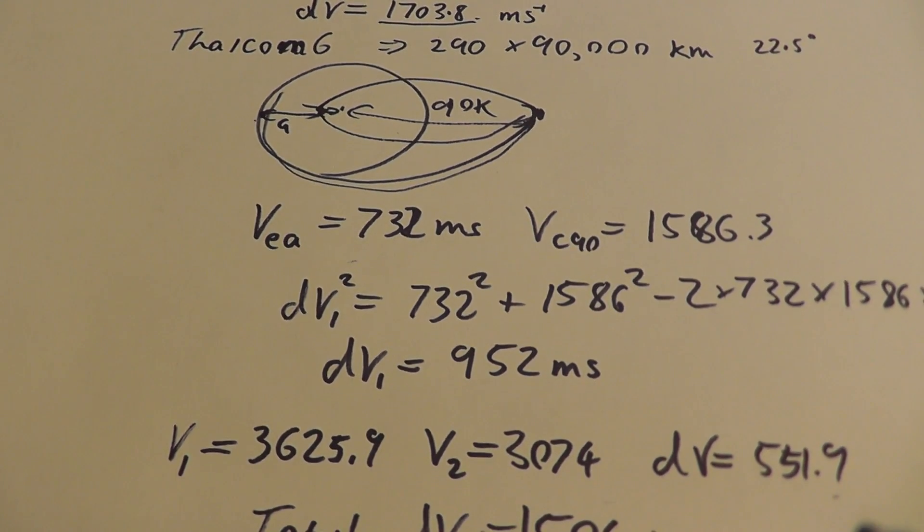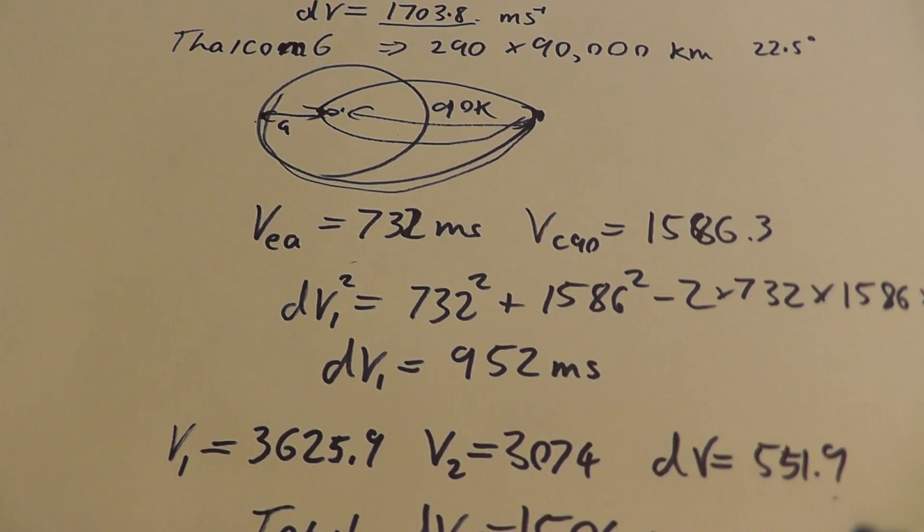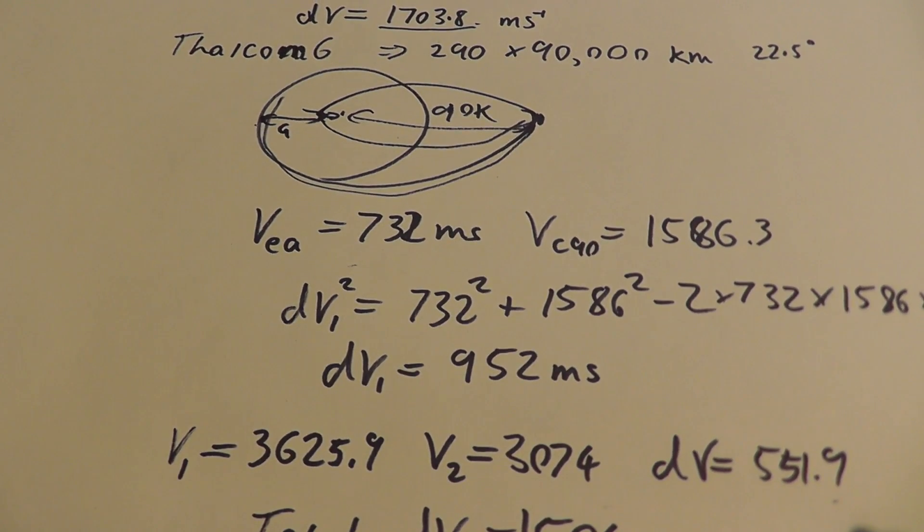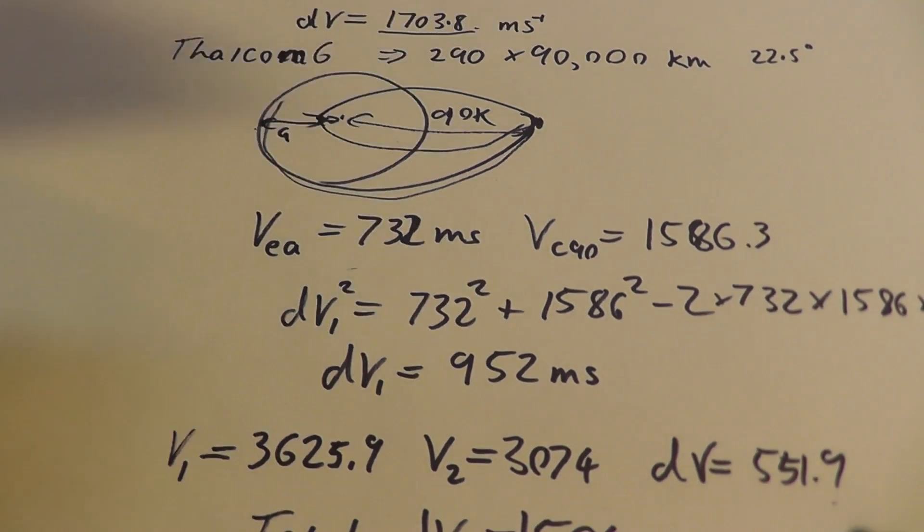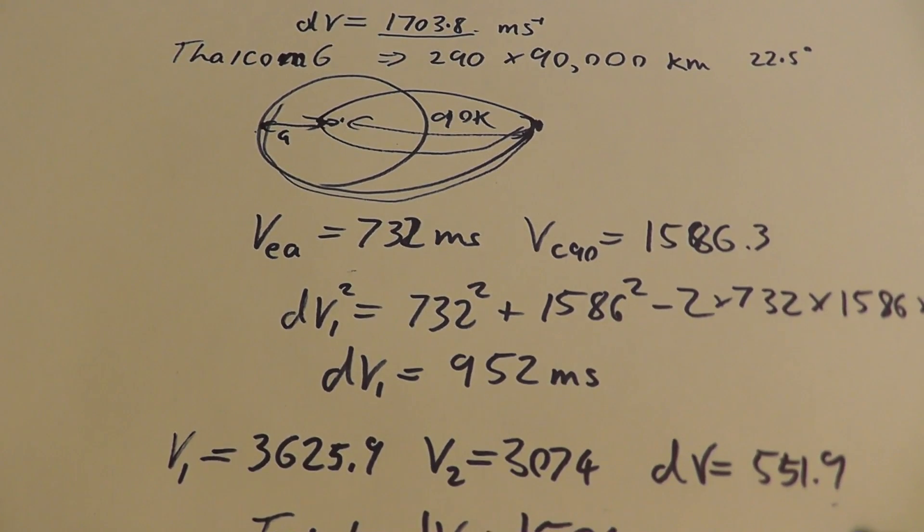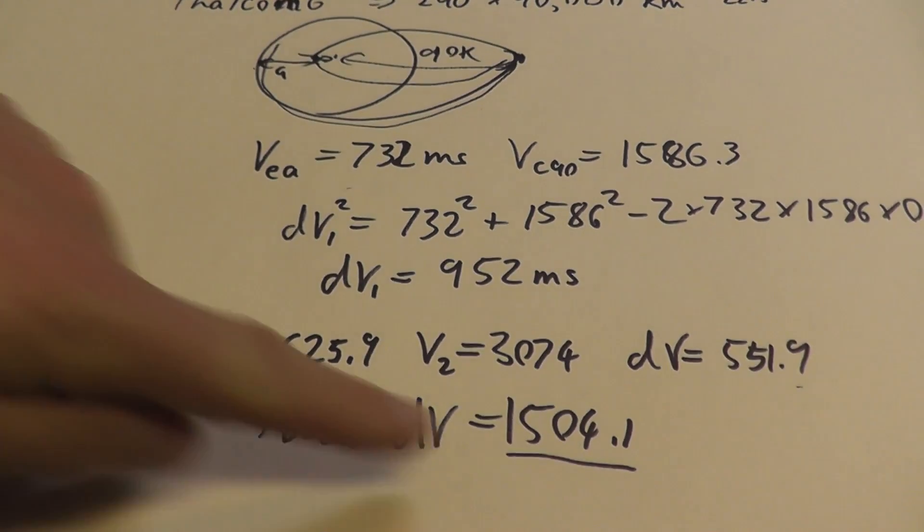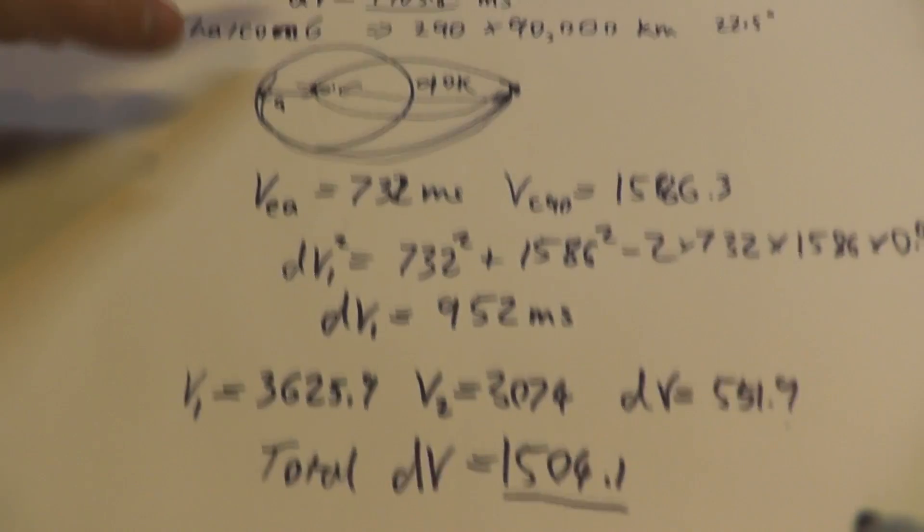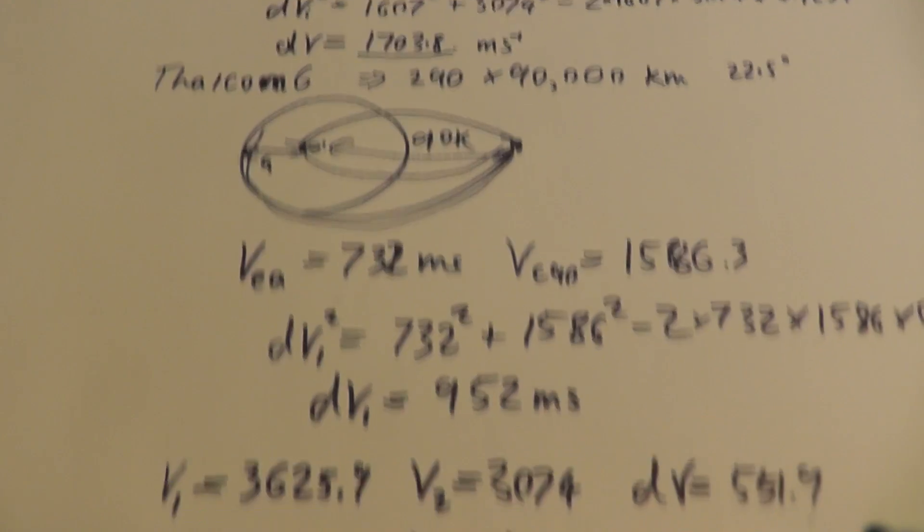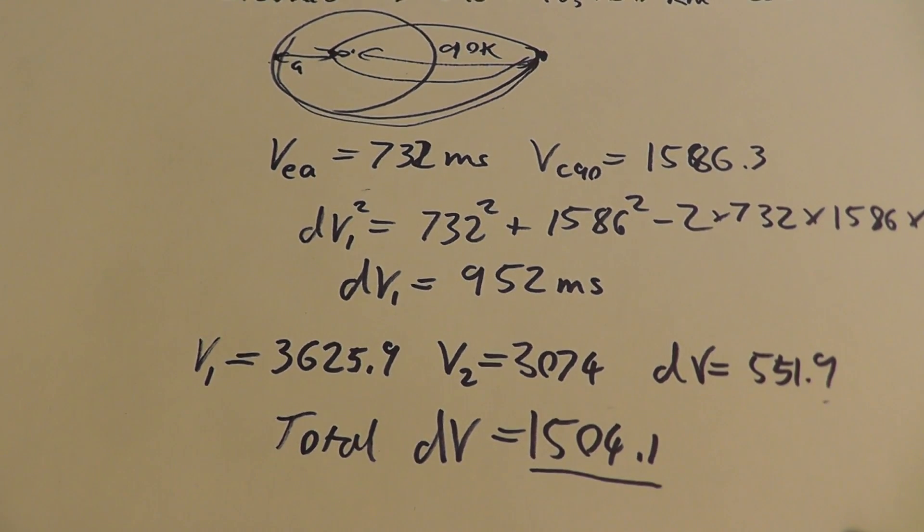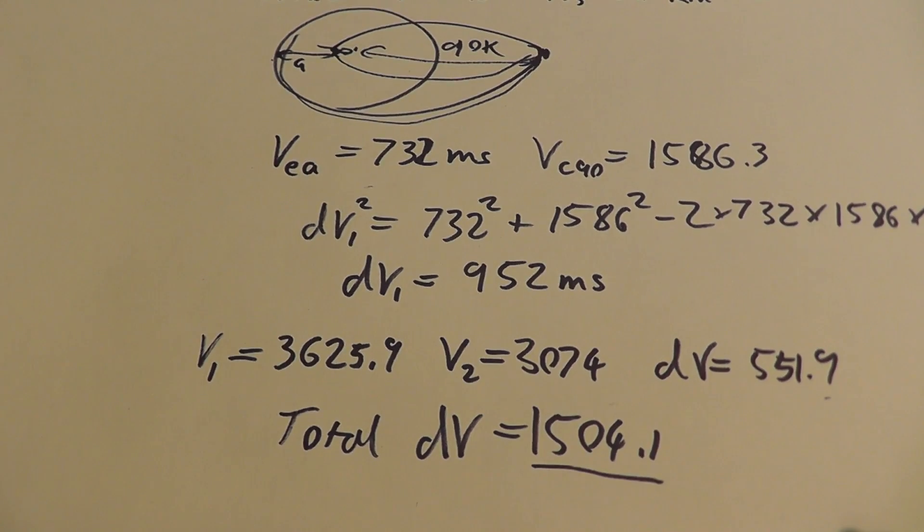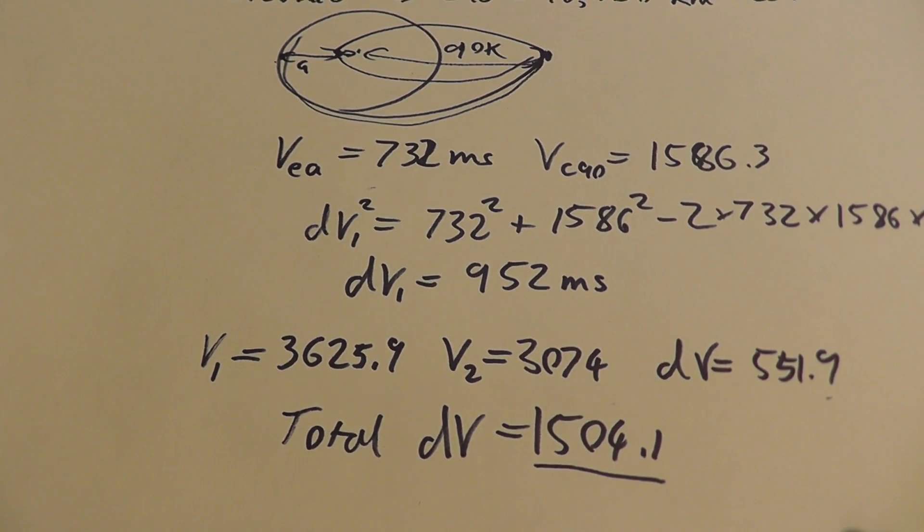If SpaceX, the Falcon, has a couple of hundred meters per second of delta V to spare, then they would ask it to insert it into this higher, more eccentric orbit. Because they know that, ultimately, they're going to save a couple of hundred meters per second themselves on their final fuel requirements. And, therefore, leave themselves with more fuel for maneuvering while in orbit.